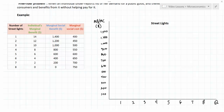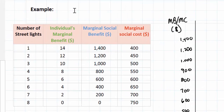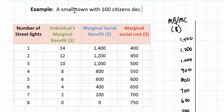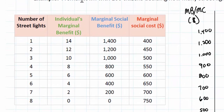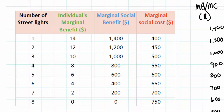Now we're going to do a diagrammatic example of the existence of public goods. We're going to stick with our example of street lights introduced in the first part of this lesson. In the table on the left, we've got a hypothetical situation in which there is a small town with 100 citizens deciding how many street lights to install on the main street. We've got in the table the marginal benefits and marginal costs of street lamps for an individual in this small town.